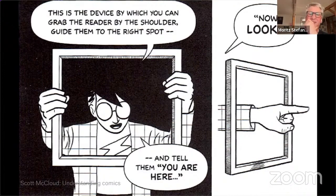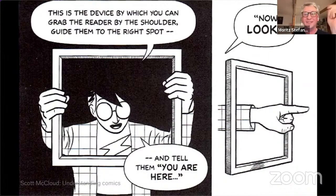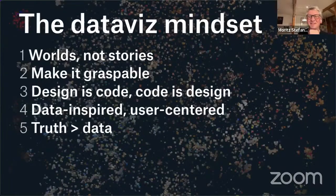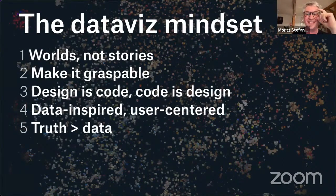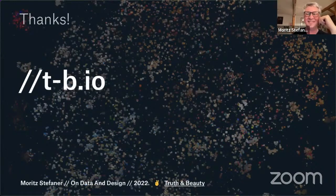If that works, it's just beautiful — and that's what we should all strive for. But you have to show them the right thing. So here are my five points: worlds not stories, make it graspable, design is code and code is design, be data-inspired but also user-centered, and favor truth of the data. That's it from me.